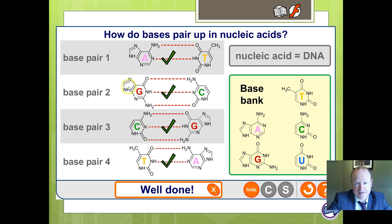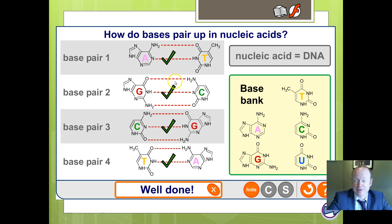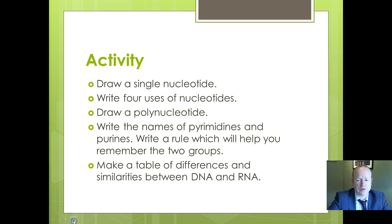With A and T — adenine and thymine — you've got two hydrogen bonds. These are weaker bonds, which are more easy to break. When we're looking at replication of DNA, we'll talk about why we want them to be easy to break. With cytosine and guanine, you've got three bonds. It's just the arrangement of how these things fit together — you'll always get a two-ring pairing with a one-ring so they fit together in the right shape.